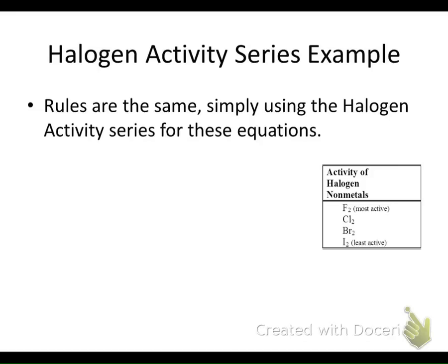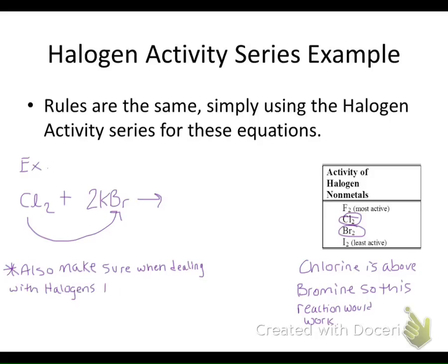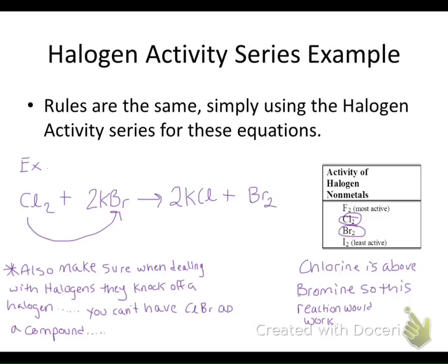For the halogen activity series, the rules are the same — we simply use the halogen activity series at the bottom of the sheet. Remember these are also our diatomic molecules, so make sure you're writing them as diatomic. For example, chlorine plus potassium bromide: chlorine is above bromine on the halogen activity series, so this reaction works. Chlorine kicks off bromine — you can't have a chlorine-bromine compound since both are negative — creating potassium chloride and bromine gas, written as a diatomic molecule.